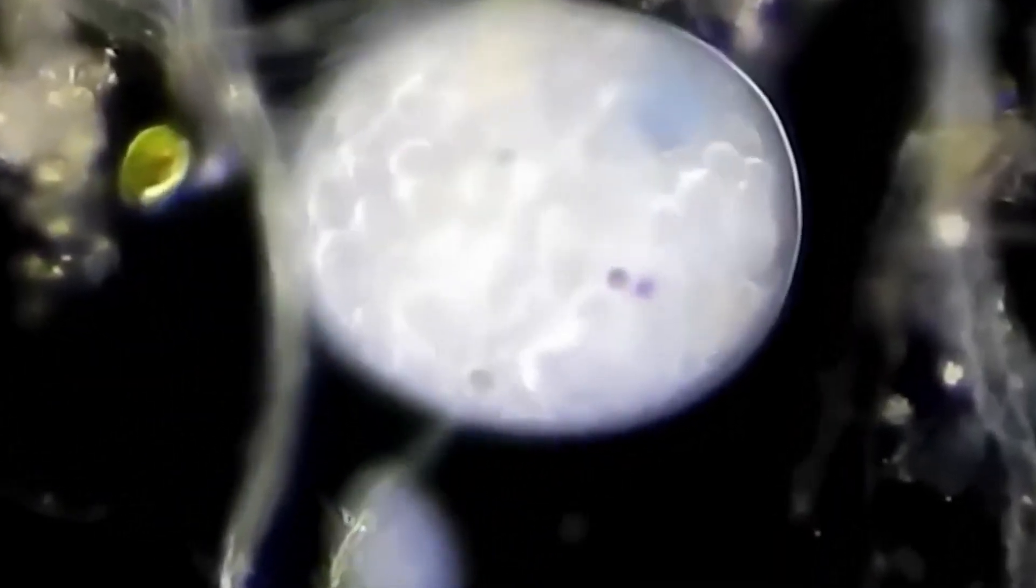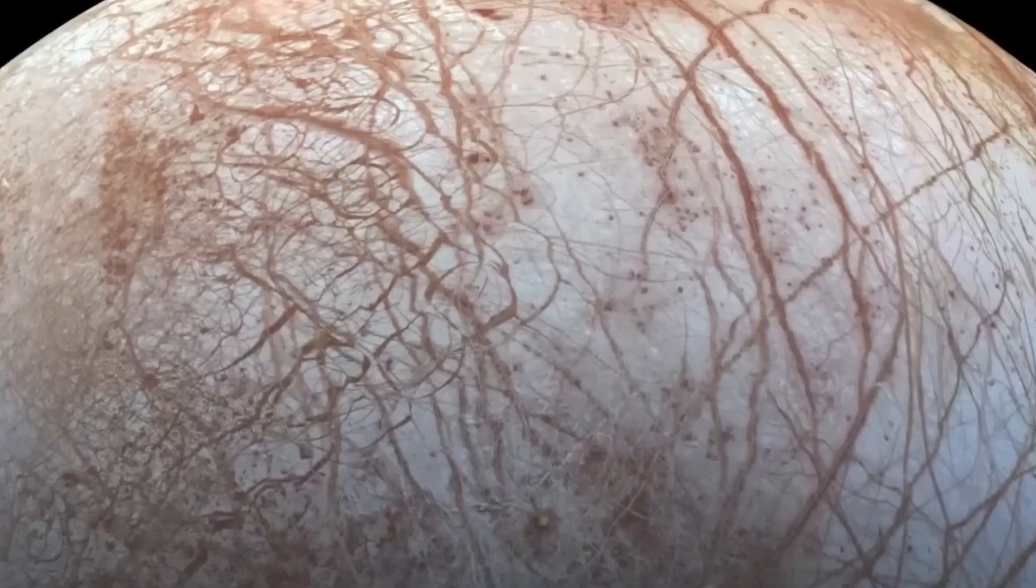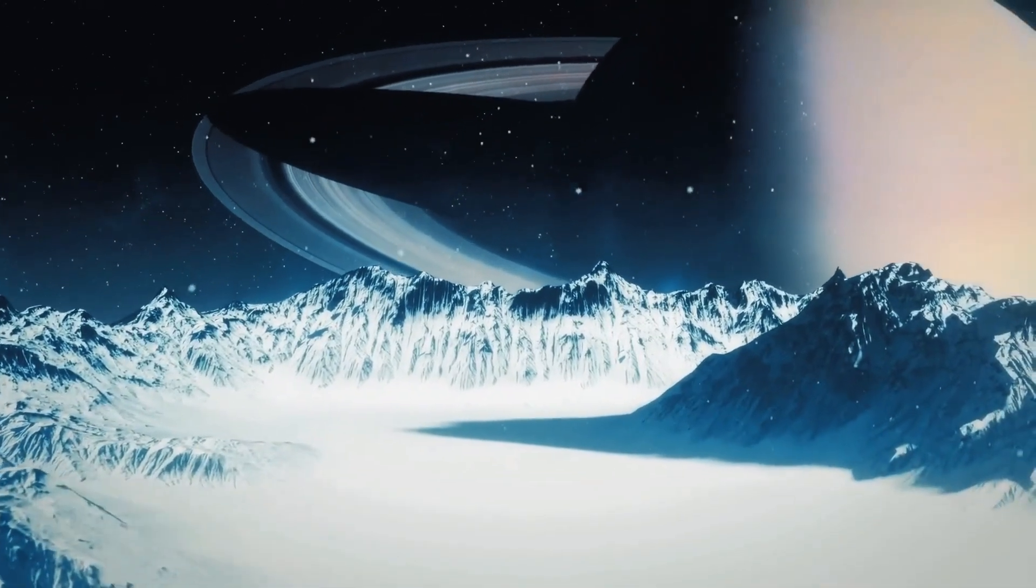The moon Europa contains a sea. In fact, its water content is double that of Earth. There is an ocean on Europa. In actuality, Europa has twice as much water as Earth.